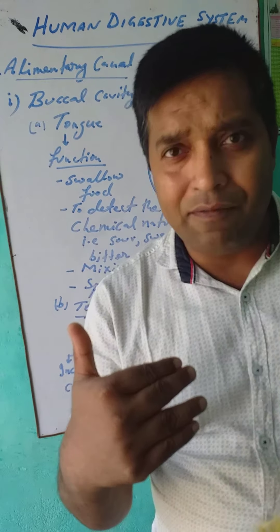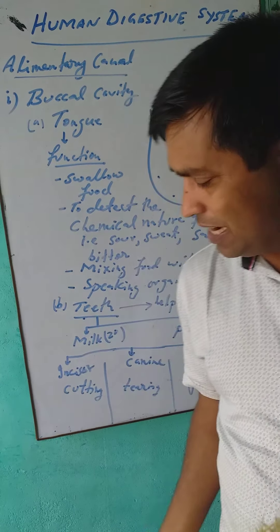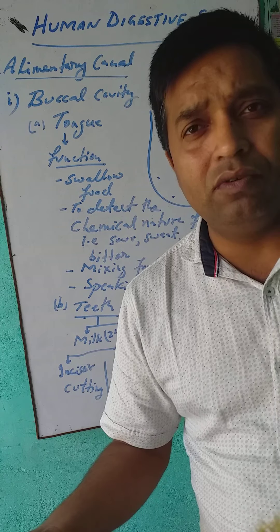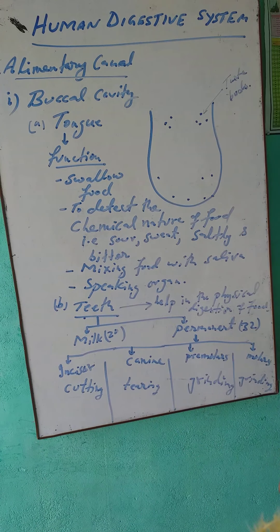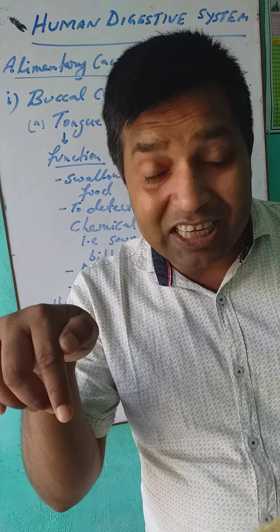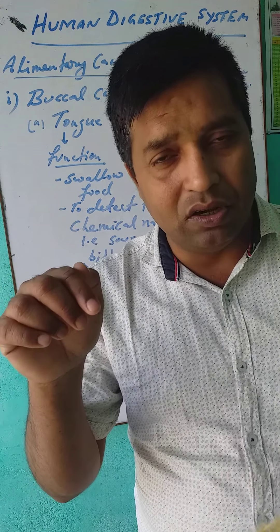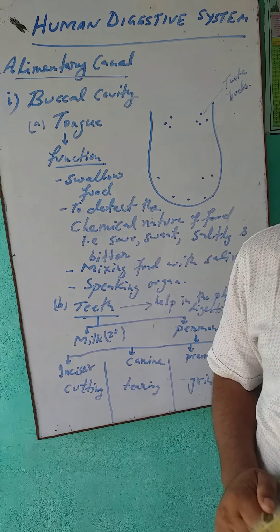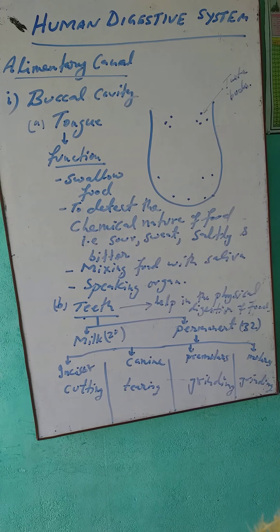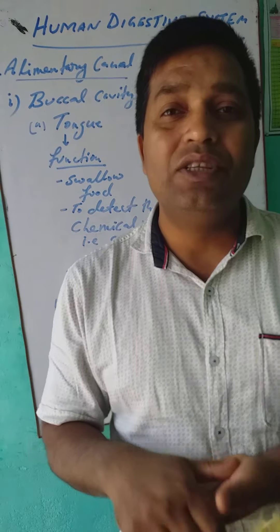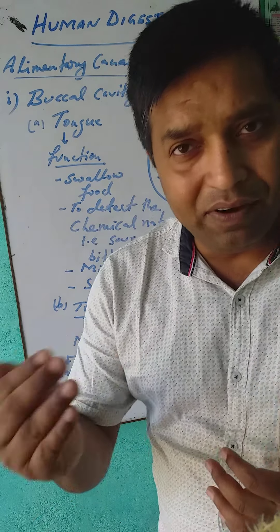In the upper jaw and lower jaw we have four incisors — they are cutting teeth that help to cut the food. Canines are like a pointed needle-like structure; there are two in the upper jaw and two in the lower jaw, making four canines, which help to tear the food — like a tiger. Premolars and molars have a flat surface, which is why they are used to grind the food. So all these teeth have different functions.